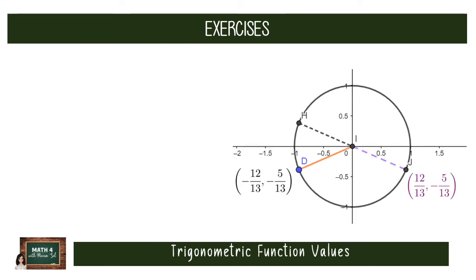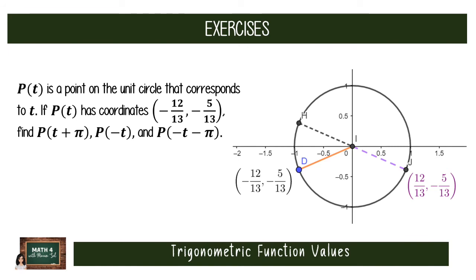Lastly, let's find the coordinates at negative t minus π. Starting from negative t, which we already determined, we rotate π radians in a clockwise direction since it is negative. That brings us to a point in the fourth quadrant with coordinates (12/13, −5/13). So the coordinates at negative t minus π equal (12/13, −5/13).